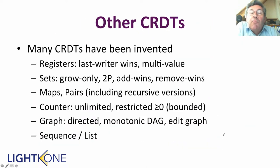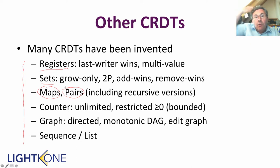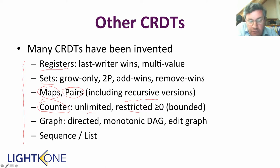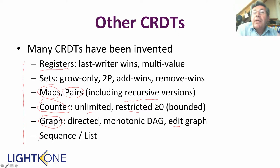Now you can see a little more of the kinds of things you can do with this theory — many more CRDTs have been invented. Here's a short list: different kinds of registers, different kinds of sets, maps (which are like dictionaries), pairs (a pairing operation to build more complicated composed CRDTs, including recursive versions where maps contain maps), counters — both unlimited and bounded counters that will not allow the value to go beyond a certain limit — also graphs, directed monotonic DAGs, graphs with editing operations where you can add, remove, and edit in different ways, different kinds of sequences and lists, and more complicated CRDTs used for collaborative editing.